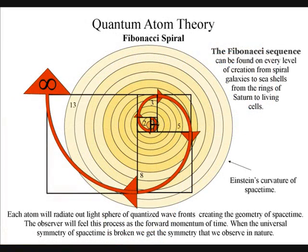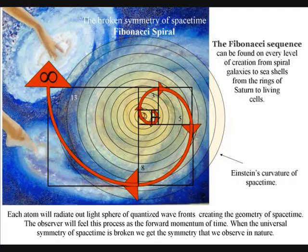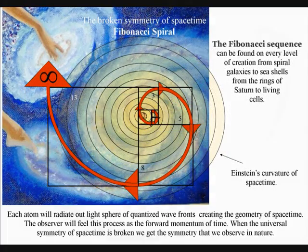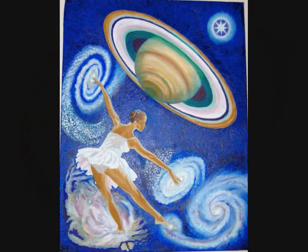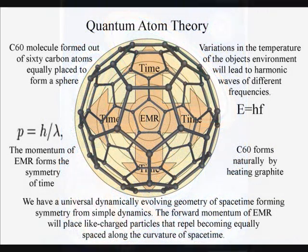The mathematics of the golden ratio and the Fibonacci sequence are intimately interconnected. The Fibonacci sequence can be found on every level of creation from spiral galaxies to seashells, from the rings of Saturn to the living cells.